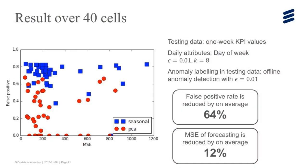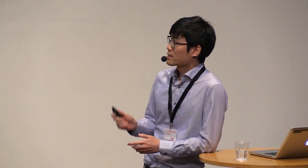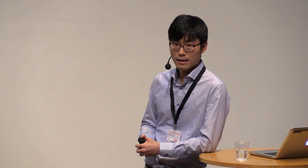This is another preliminary result over 40 cells. We chose 40 cells which have seasonality so seasonal decomposition can work. I would say this is preliminary because in our PCS forecasting model, we only use day-of-week information, which is the same information as seasonal decomposition. The testing data is one week KPI values. In this plot, each point corresponds to one cell performance metric. Normal labeling is obtained by offline analysis with gamma equals 0.01. X axis is false positive rate, and Y axis is mean square error over forecasting. We obtain this performance gain.